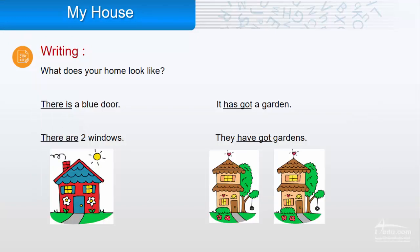Writing. What does your home look like? In this picture, we have one door so we say there is a blue door. We have two windows so we say there are two windows.